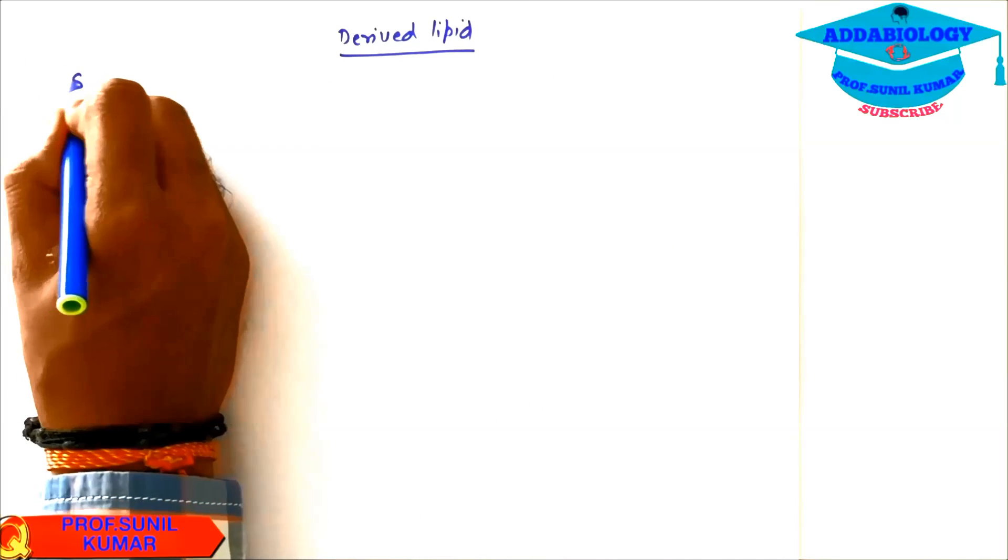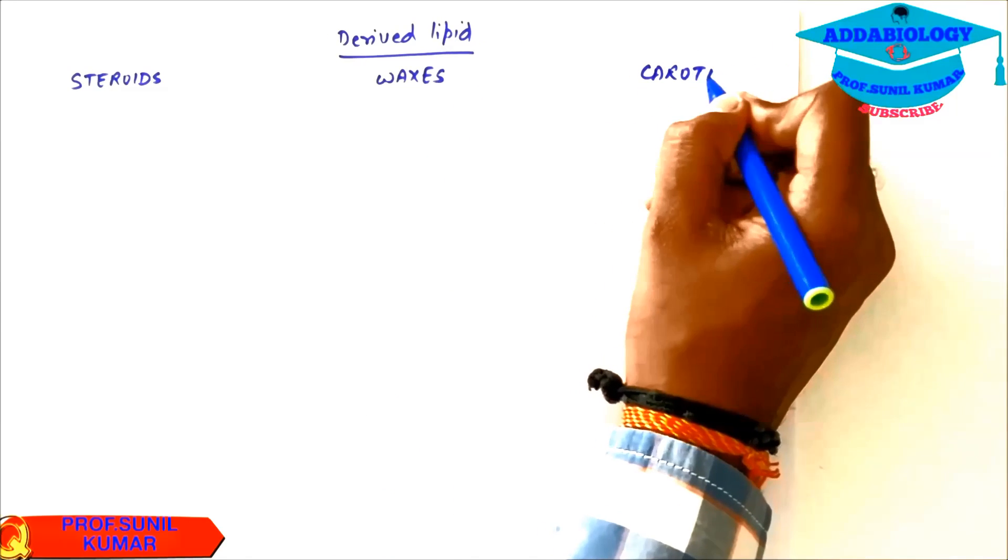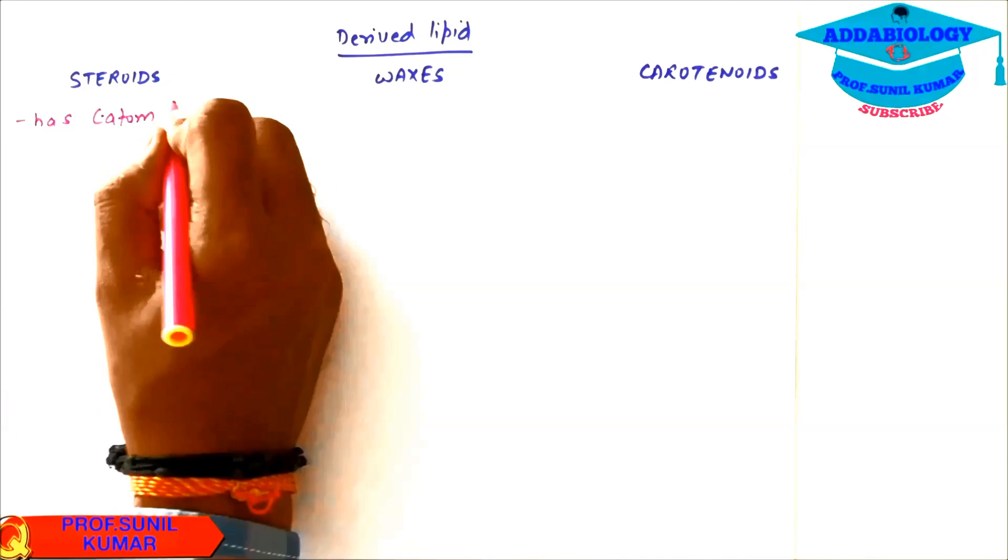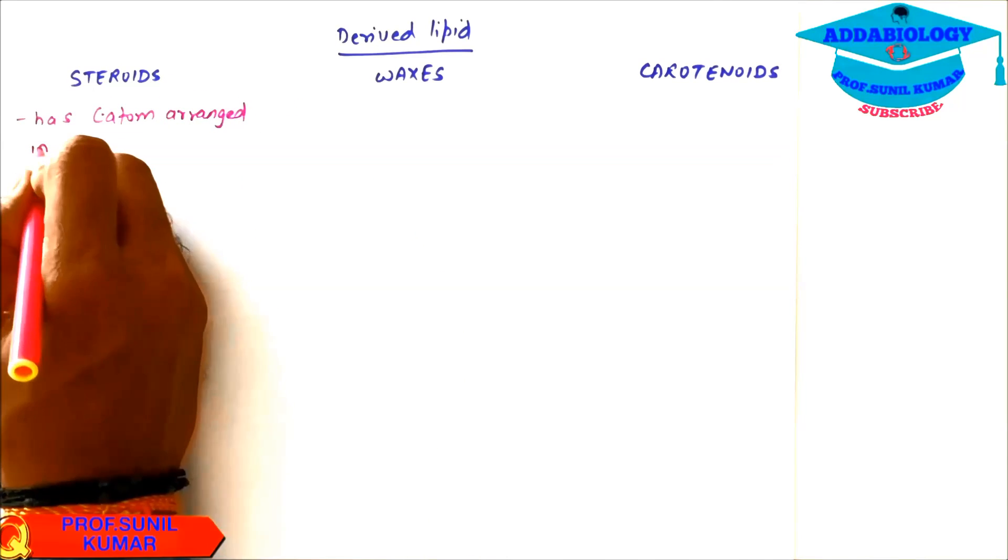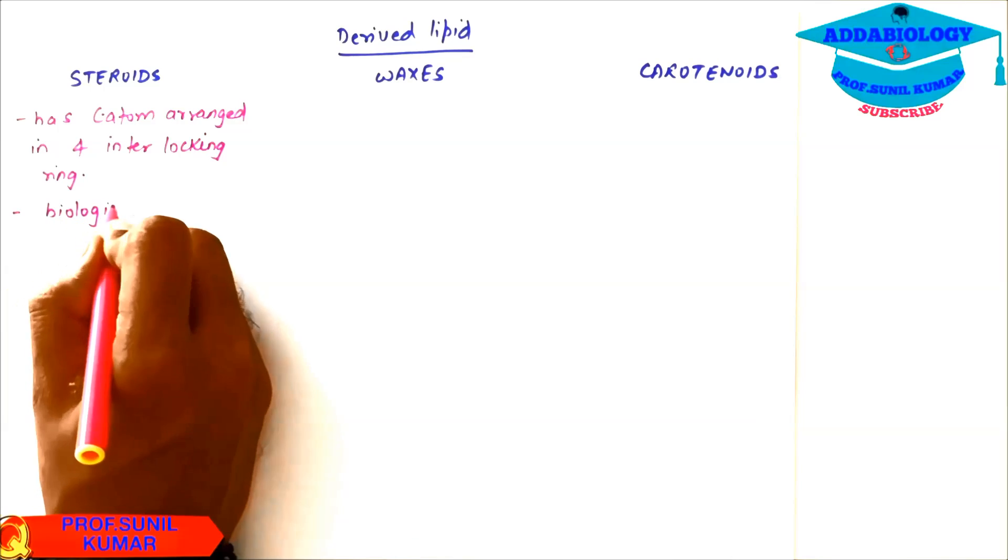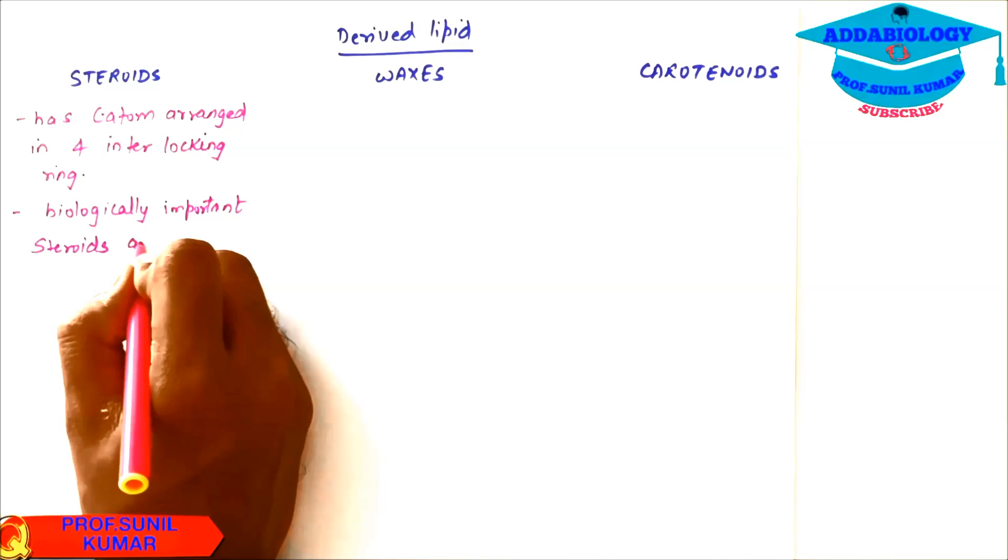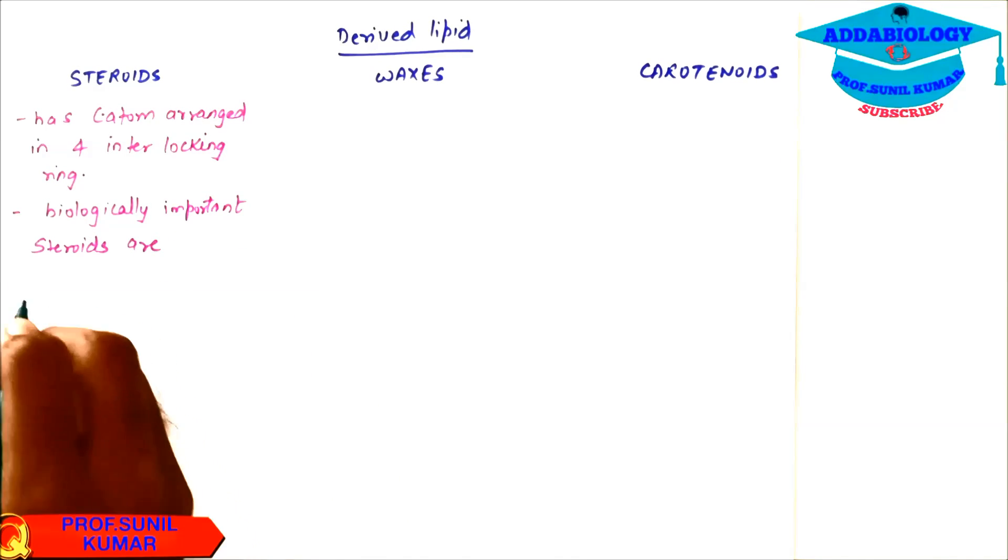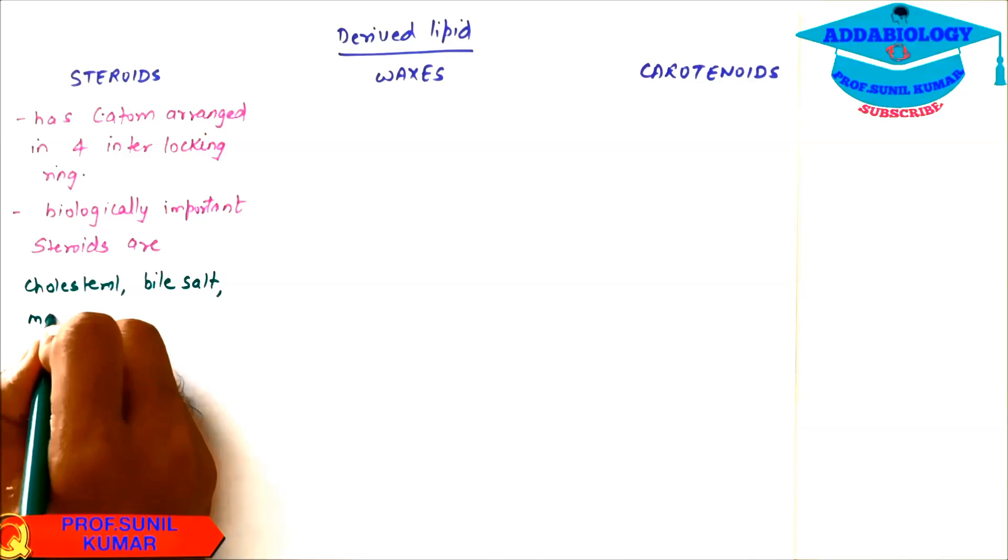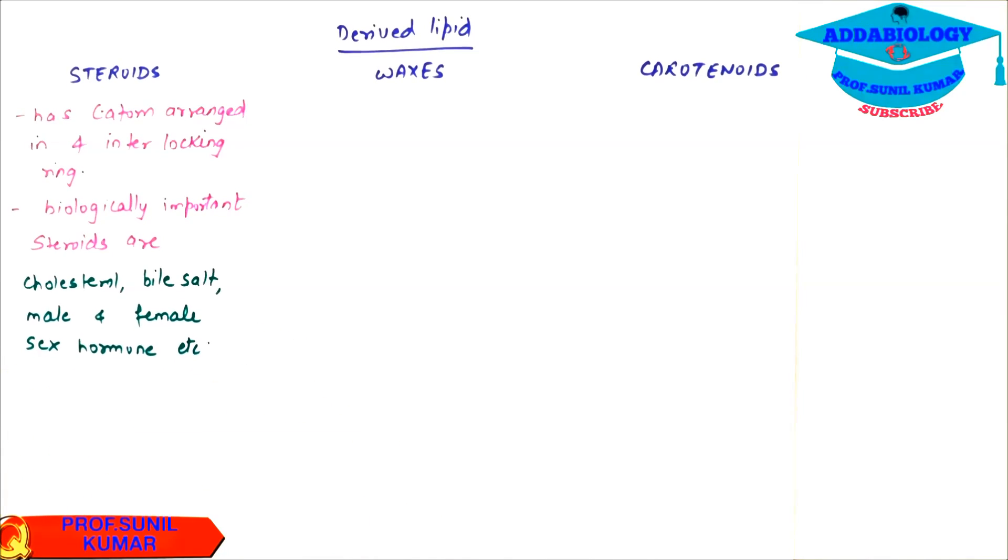When we talk about derived lipids, it includes steroids, waxes and carotenoids. What are steroids? Steroids have carbon atoms arranged in the form of four interlocking rings. It means there will be four rings and all rings are linked to each other. Steroids are biologically important, forming one of the sex hormones like testosterone, estrogen, cholesterol, bile salt. Male and female sex hormones are all steroids.